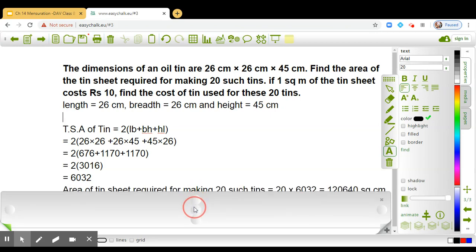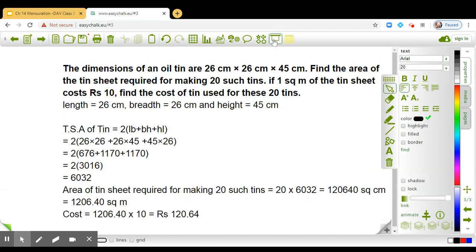So now we have to find the area of the sheet required for making 20 such tins. So what are we going to do? Multiply 6032 by 20. So we get 120640 square cm. This is the area of the tin sheet required.